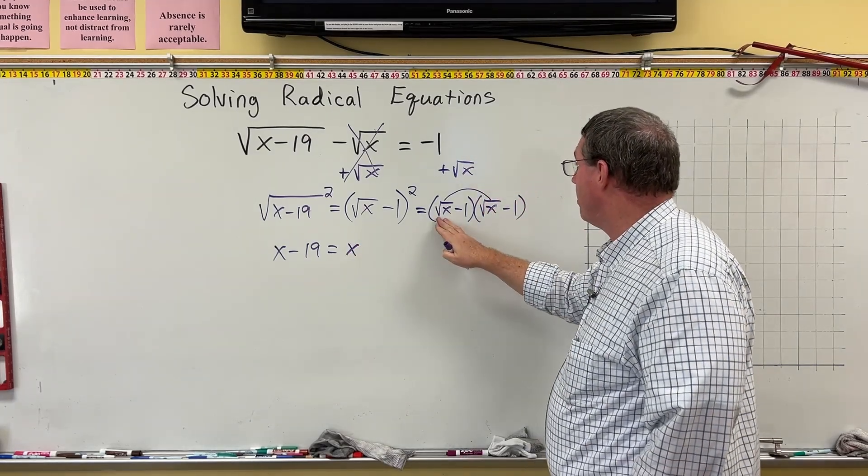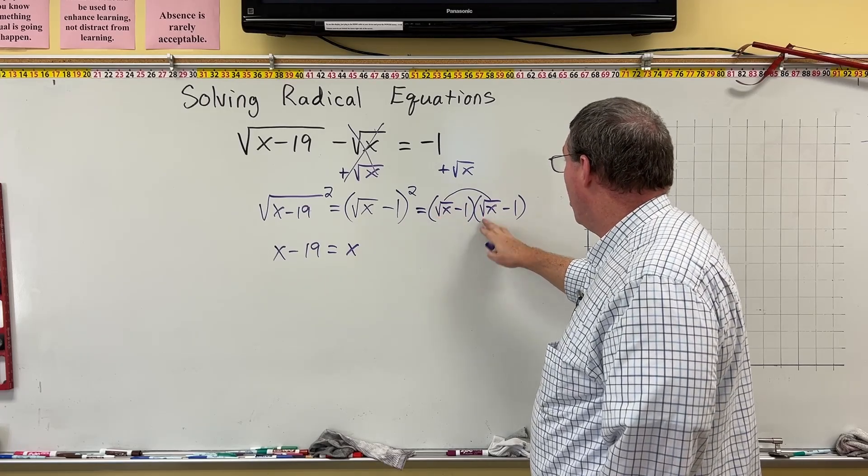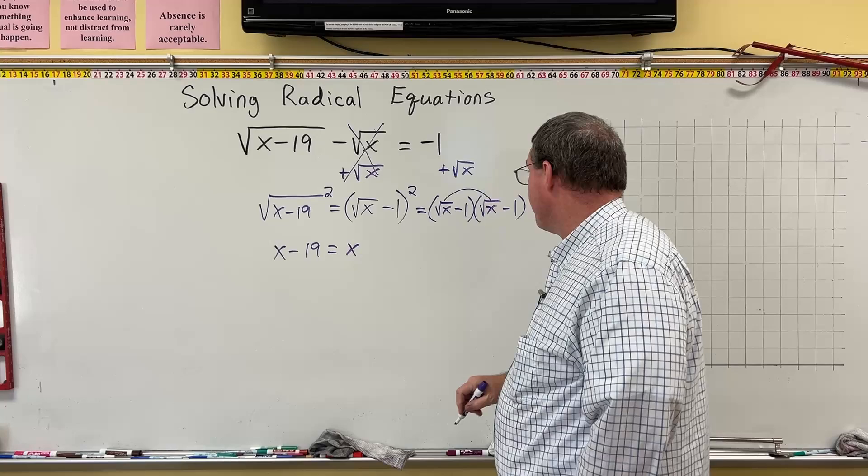Remember, when we multiply the square root of something times the square root of the exact same thing, all it does is cancel the square root symbol. So we have x.